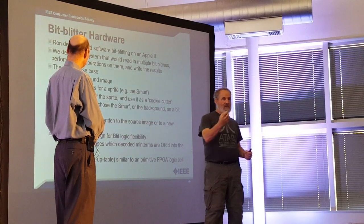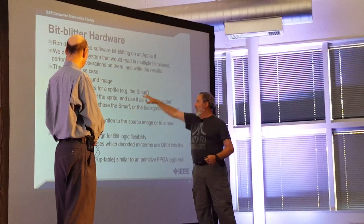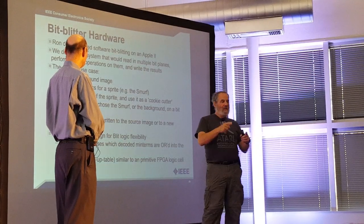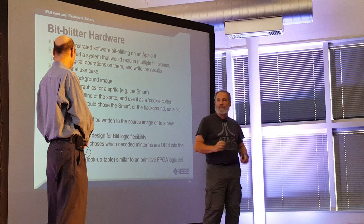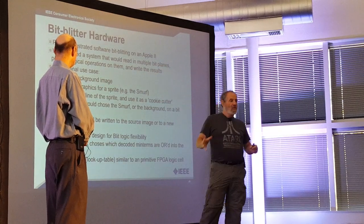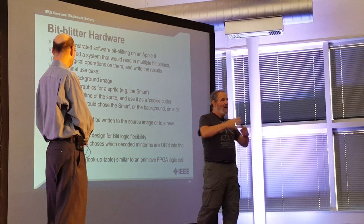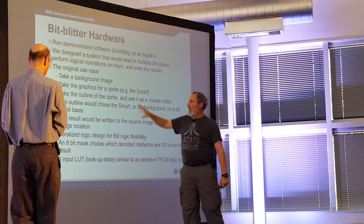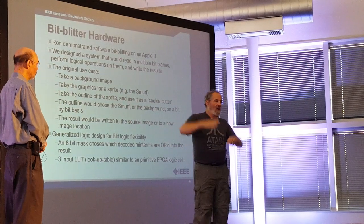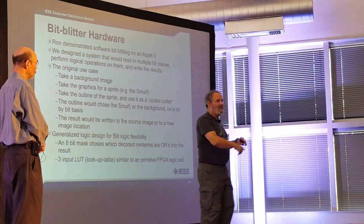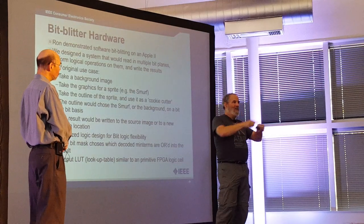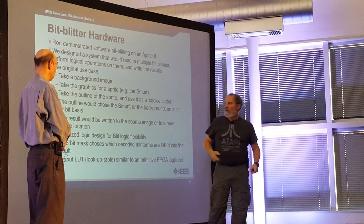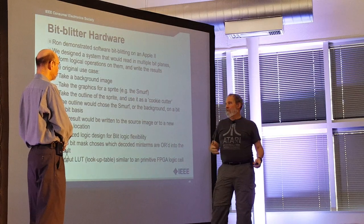Imagine we want to do a Smurf cartoon. We have a background with some number of bits of depth, the graphics of a character, and the outline of that character. What the bit blitter can do — in the time it takes to read and write data into memory — is grab the graphics of the Smurf, grab the outline, grab the background, cut and splice them together, and place them back in the same or different memory locations.